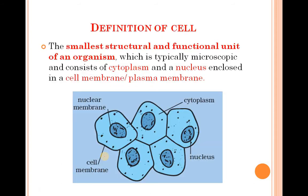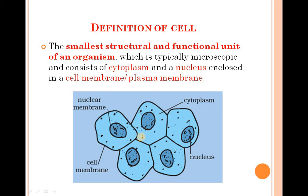Now the definition of a cell: it is the smallest structural and functional unit of an organism. A cell is the smallest structure and functional unit of any organism, which is typically microscopic and consists of a cytoplasm. The blue color substance inside a cell is known as cytoplasm. In the middle of the cell is the nucleus, and the cell is enclosed in a cell membrane — the outer layer — which is also known as the plasma membrane.